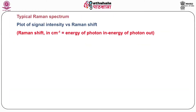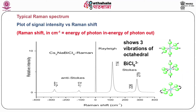A typical Raman spectrum has the Raman shift in per centimeter on the X-axis and relative intensity on the Y-axis — a plot of signal intensity versus Raman shift. Raman shift describes the energy difference between incident and scattered photons. A typical spectrum of cesium CS2NA BiCl shows anti-Stokes peaks at 277 and 112 wavenumbers. The Stokes signal of PiCl6 is obtained at 114, 226, and 279 per centimeter. At zero frequency, Rayleigh scattering — the dominant scattering — is observed.